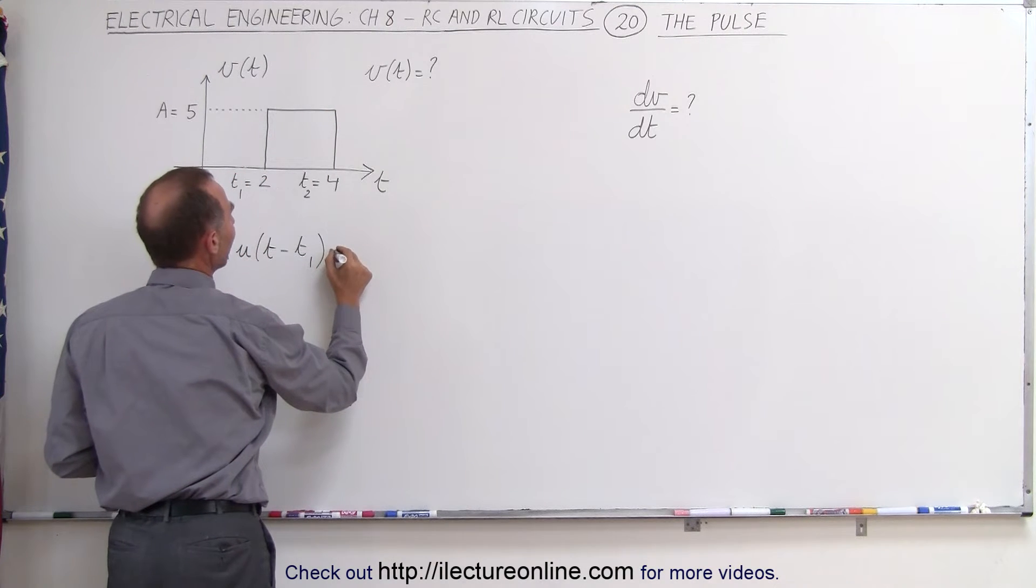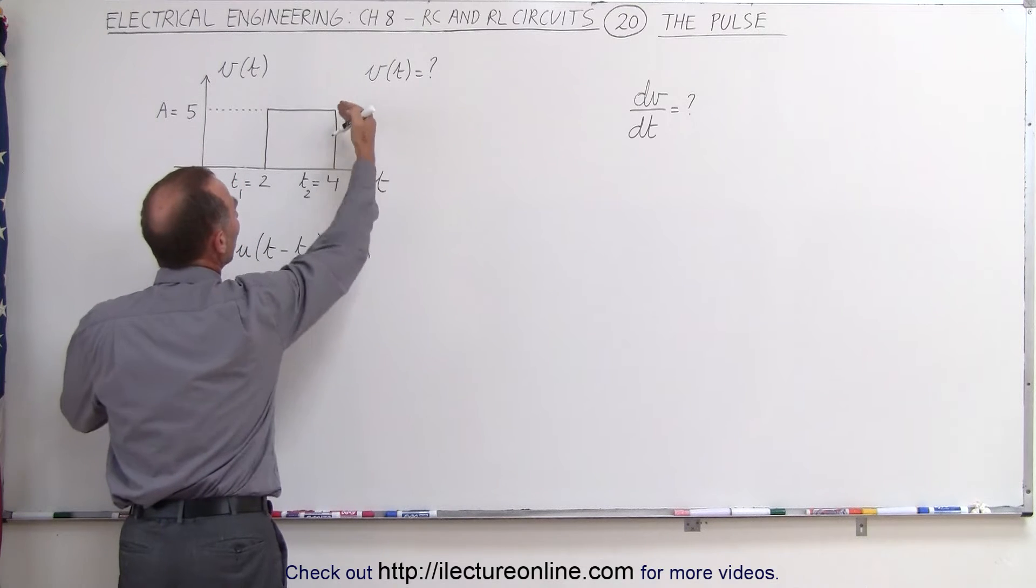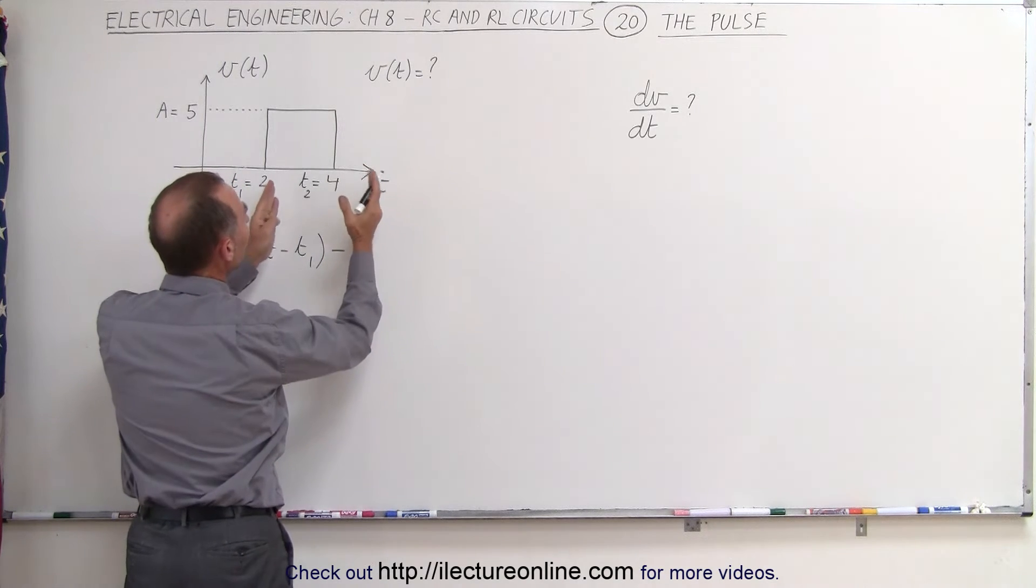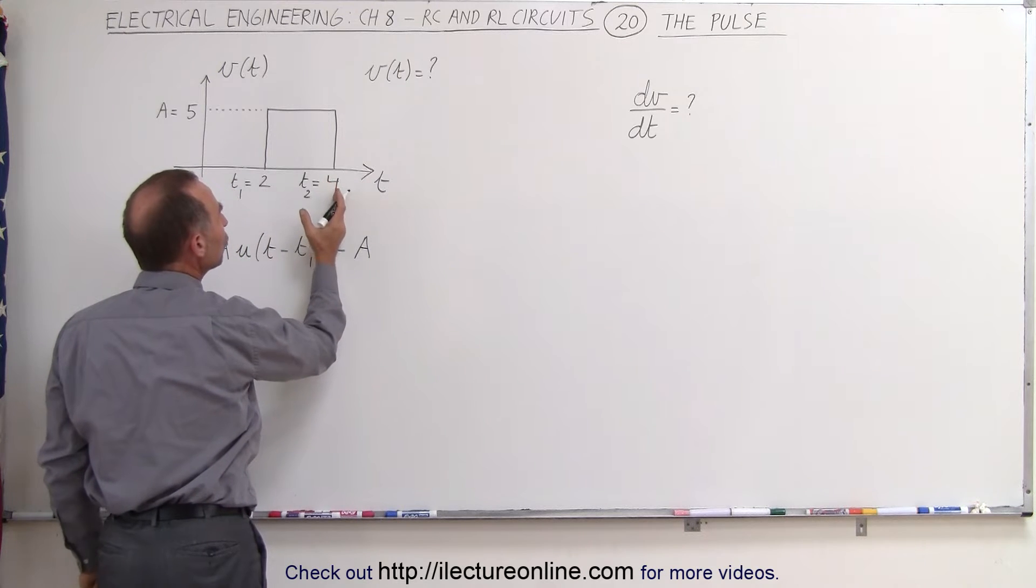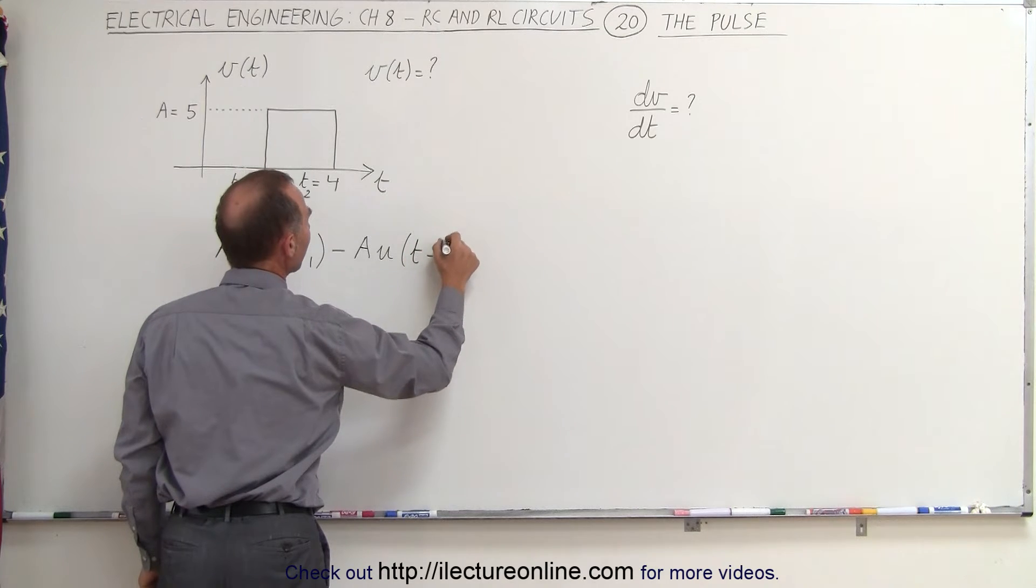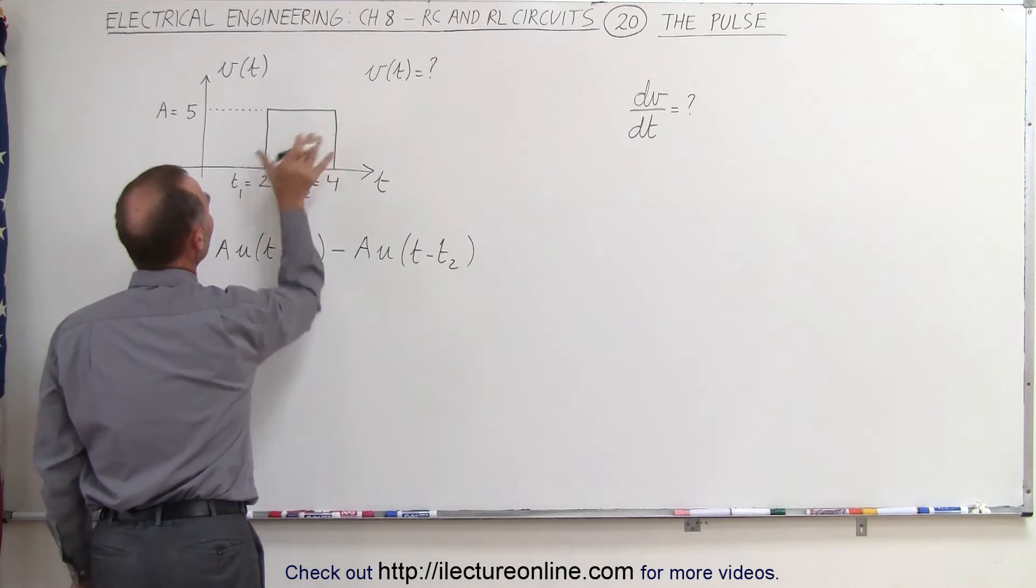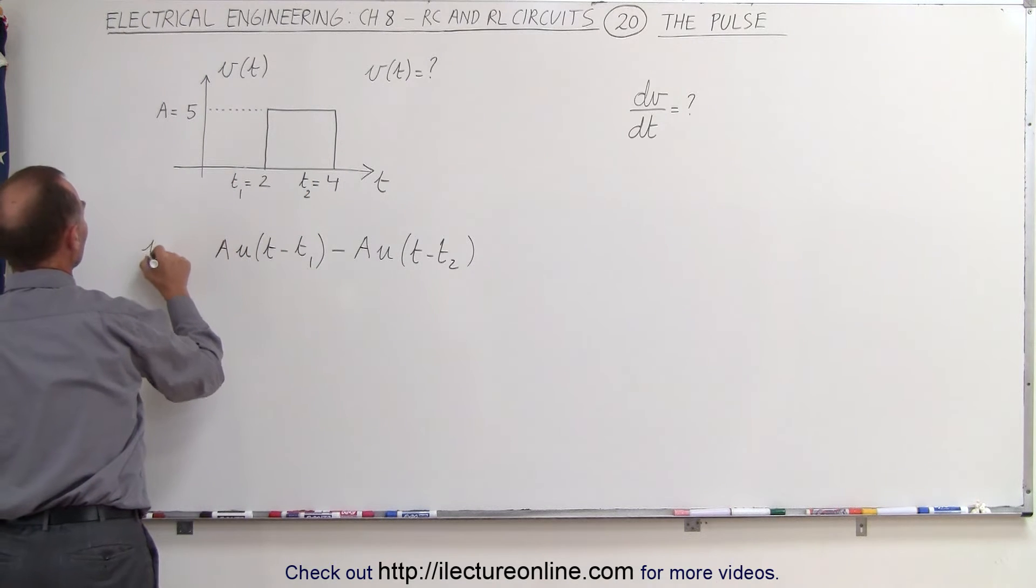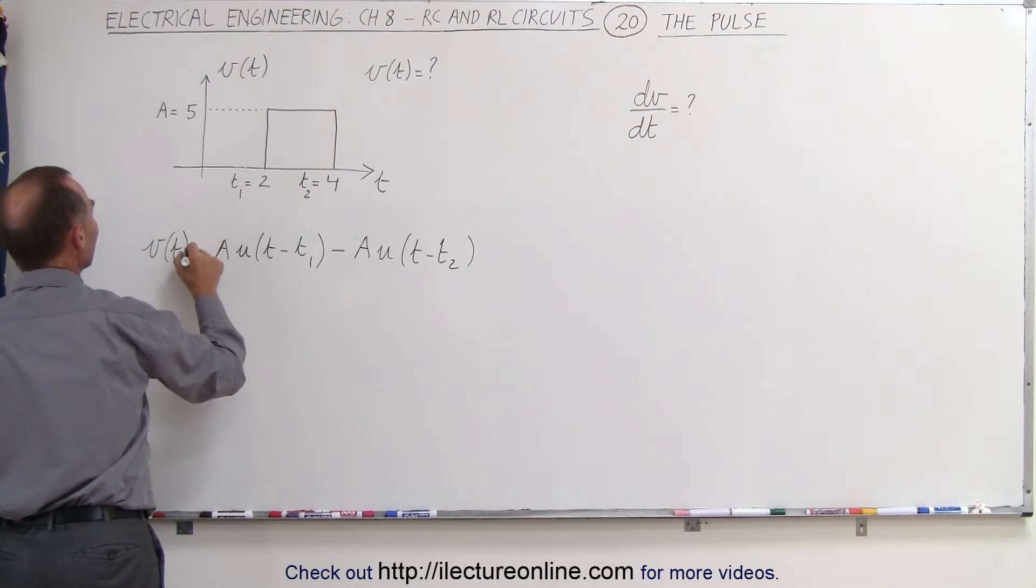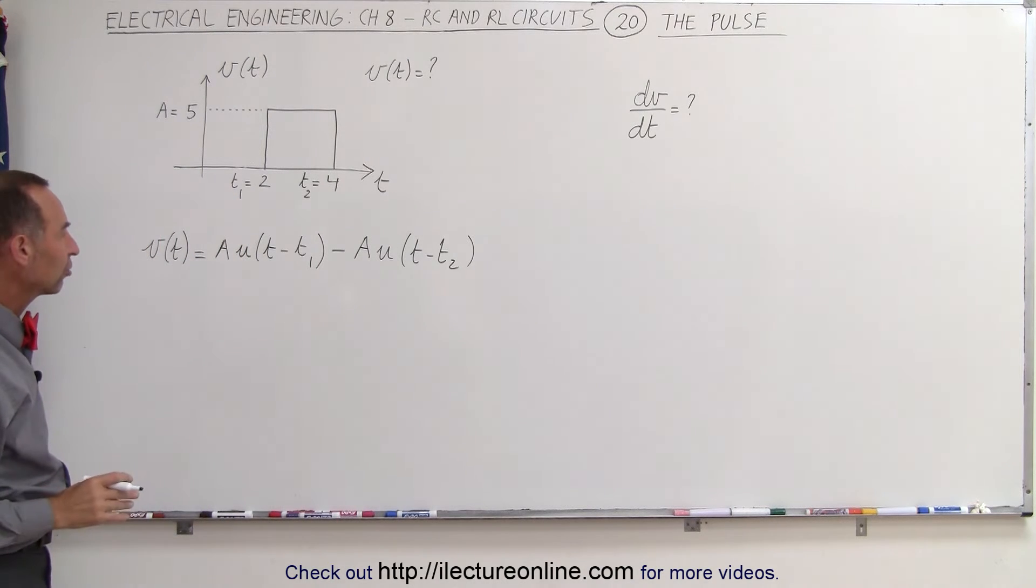That can be done by saying minus, again the amplitude, minus because we want to subtract it. Now we're going to put in a step function that starts at t2, where it's four seconds, so it would be the unit step function of t minus t2. And these two combined represent the pulse, and so we can say that v as a function of time can be represented by the sum of those two step functions.